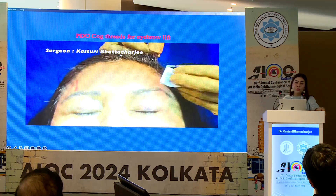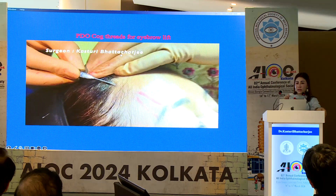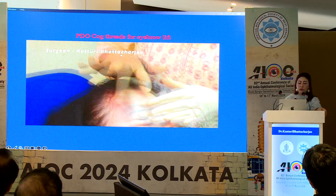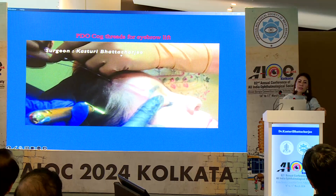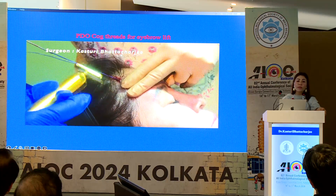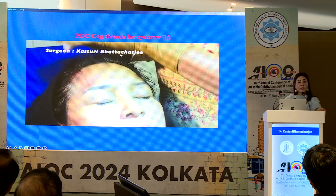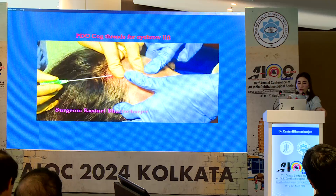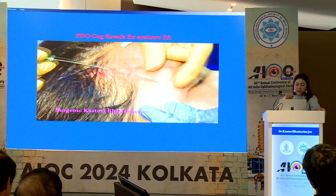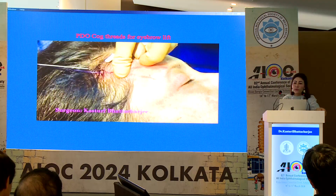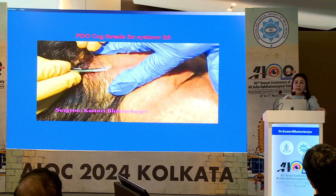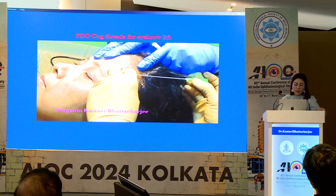A third way to lift the eyebrow is with a thread. There are different types: PDO thread, PLA thread, and PCL thread. We initially used PDO threads, but realized they last a maximum of one year. The PLA thread lasts more than a year, possibly up to two years. The technique uses blunt-tip cannulas for safety. You make an entry point, and by pulling, you can see the lift of the eyebrow on the table.